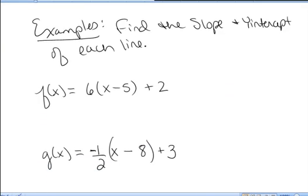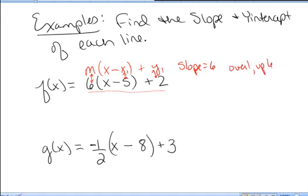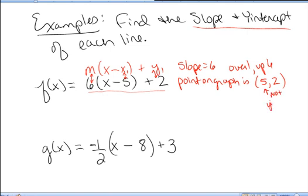Now let's look at some examples where the function isn't handed to us in mx + b form. Notice that this form of f(x) is written in point-slope form, m times (x - x1) + y1. Again, comparing that, it looks like m is 6. And a point on this line is (5, 2). So the slope is 6, which tells us we go over 1, up 6 on this line. And a point on the graph is (5, 2). But we were asked to find the slope and the y-intercept. Notice, this is not the y-intercept. This point would be over 5, up 2, certainly not on the y-axis.